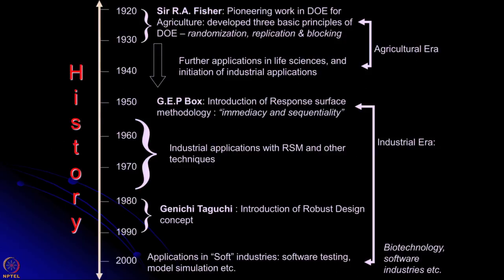Historically speaking, it was in the 1920s when Sir R.A. Fisher did the pioneering work in design of experiment for agricultural experimentation. He developed three basic principles: randomization, replication, and blocking — which we will talk about later. From agriculture it moved to biological and life sciences, and some initiation of industrial application began during the 1940s. With G.E.P. Box, the introduction of response surface methodology came and became very popular in the industrial era.